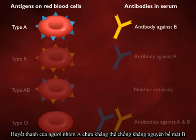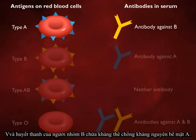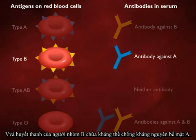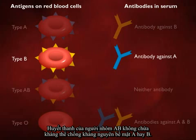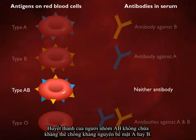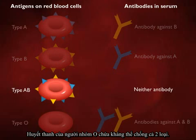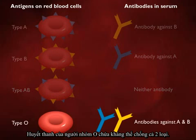The serum of people with type A blood contains antibodies against type B antigens, and the serum of people with type B blood contains antibodies against type A antigens. Type AB serum contains neither antibody, and O serum contains antibodies against both A and B antigens.